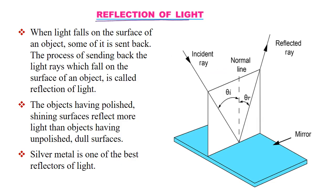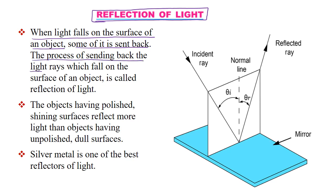Our first topic is reflection of light. When light falls on the surface of an object, some of it is sent back. The process of sending back the light rays which falls on the surface of an object is called reflection of light.